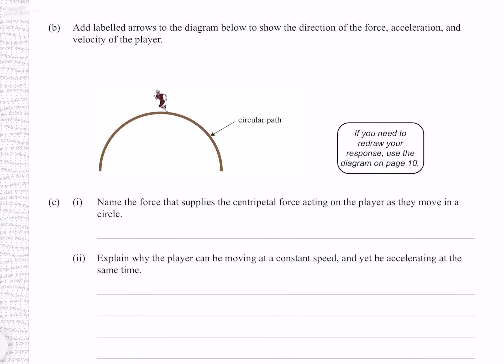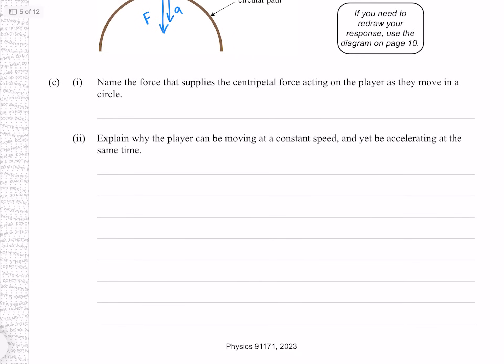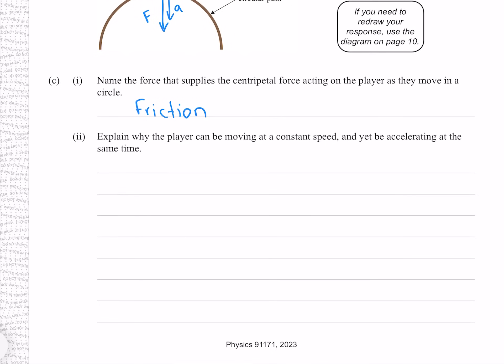Add labeled arrows to the diagram to show the direction of force, acceleration and velocity of the player. The centripetal force and centripetal acceleration are both directed towards the center, and the velocity is always at a tangent. The force that supplies the centripetal force is the friction force between the player's shoes and the ground.